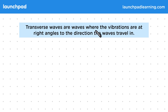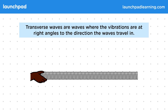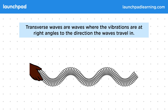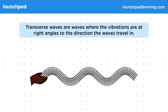Transverse waves are waves where the vibrations are at right angles to the direction the waves travel in. Examples of transverse waves are water waves and all electromagnetic waves, though a simple demonstration of a transverse wave would be moving a spring up and down like so to create this pattern.